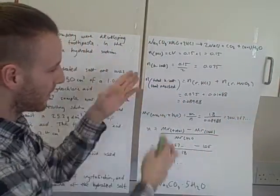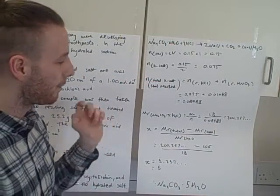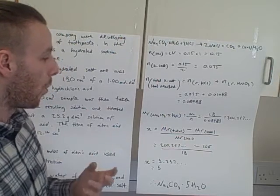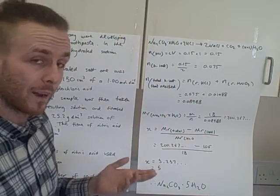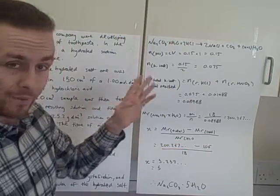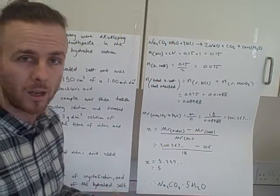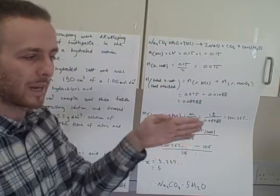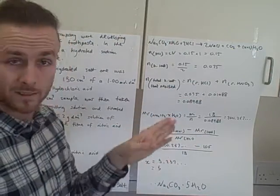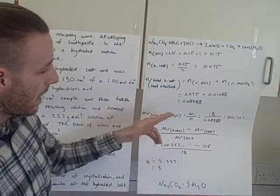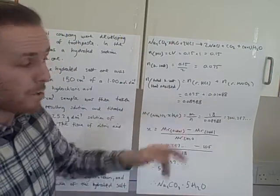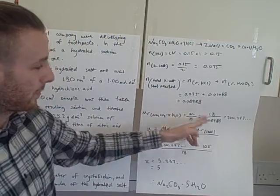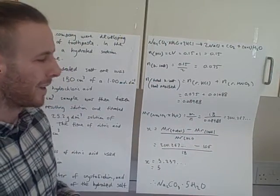We've now completed 'Did My Elephant Suck' — twice, because there were two reactants — and added them together. Now 'My' represents the last moles equation, which starts with what you're trying to find. For finding X, we really want the Mr, because once you have the Mr you can use the periodic table to identify the element or group. So Mr equals mass divided by moles. I know the mass from the diagram, and we've just calculated the moles.